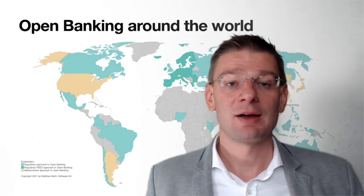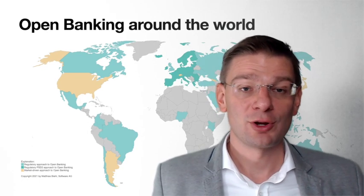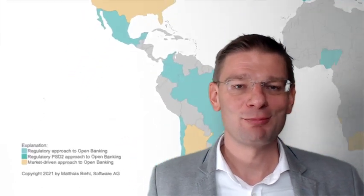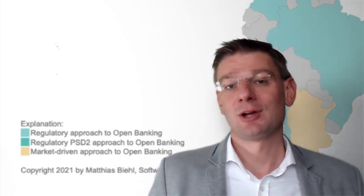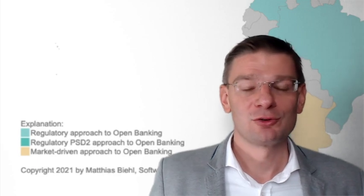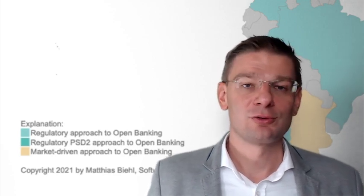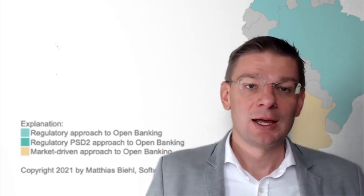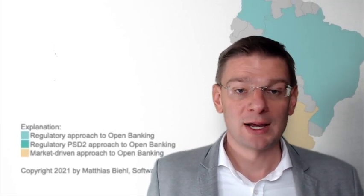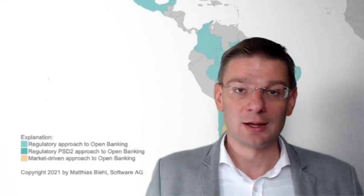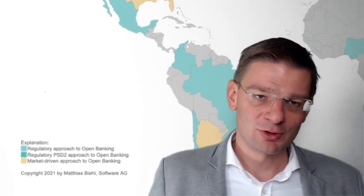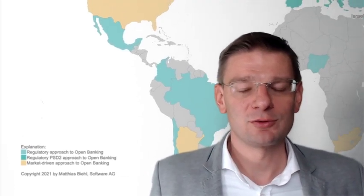What you will notice is that there are several colors. There is a light green color — light green means that open banking is being discussed there. There is a dark green color, which is the PSD2 area. PSD2 has been the starting legislation, together with CMA-9, that formed open banking, starting out in Europe and the UK. So dark green areas are the PSD2 countries.